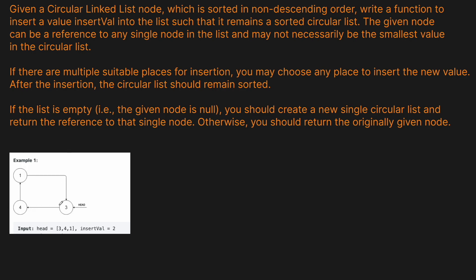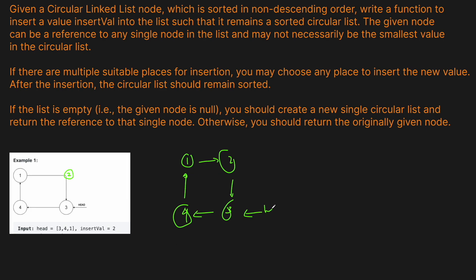Let's look at a basic example. We're given this node — one, three, and four — and the node that we're given is the four here. We want to insert the value two. In order to maintain sorted order, the circular insertion should happen between one and three, so now we'd have one, two, three, four.